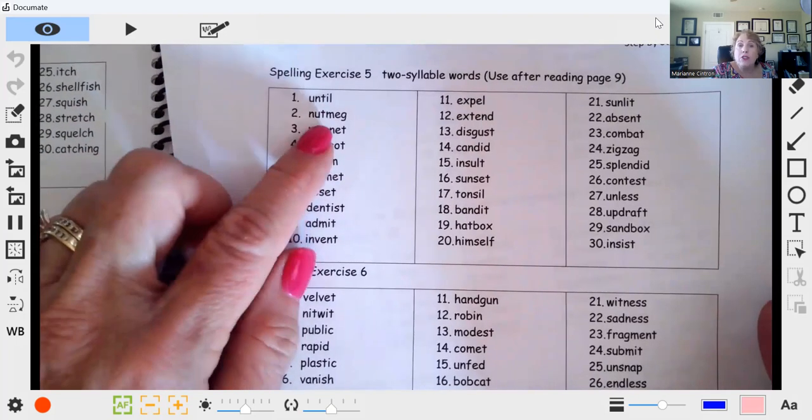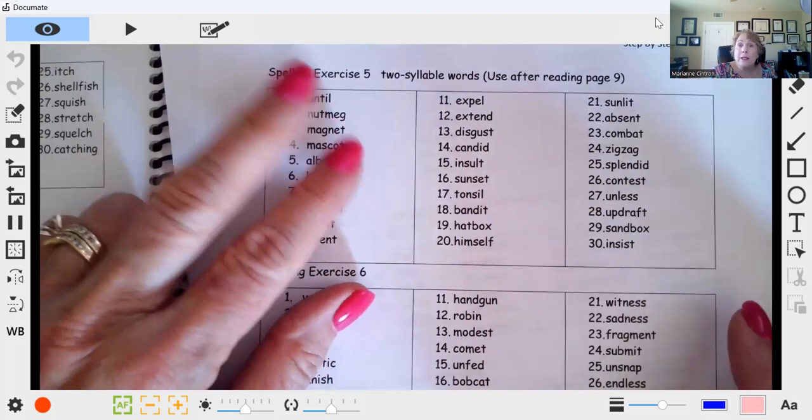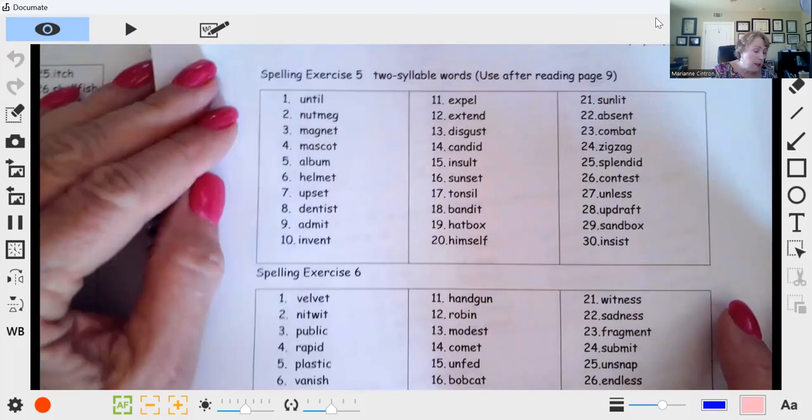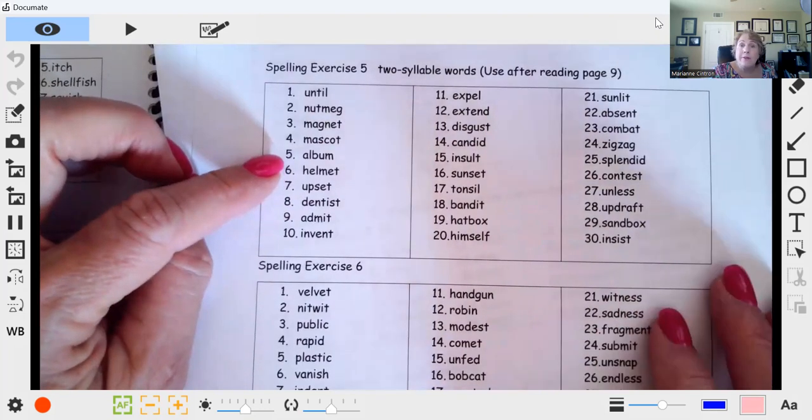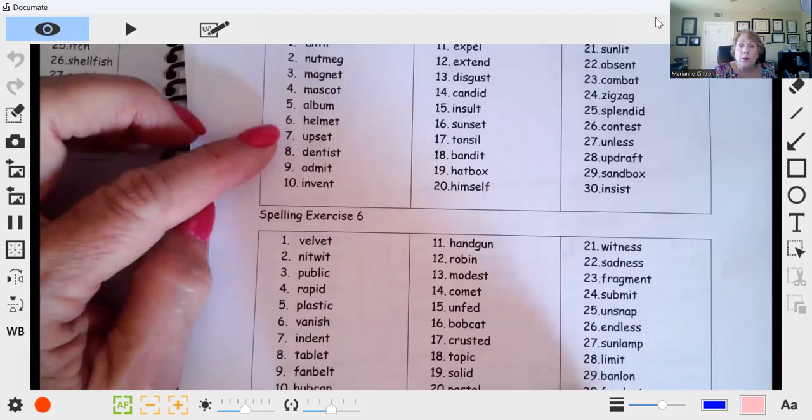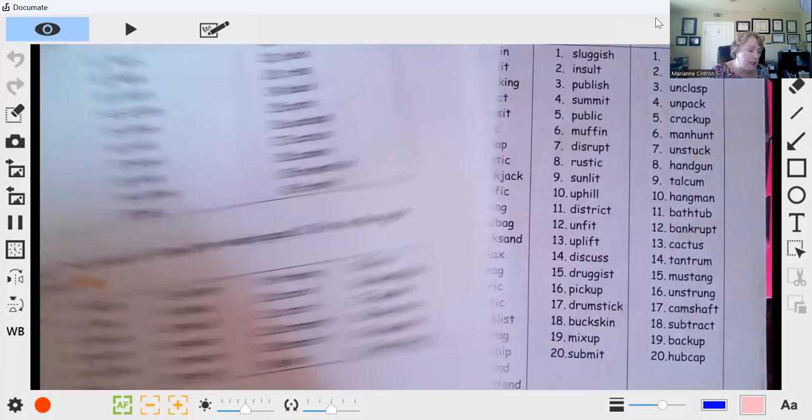So what I'll have a child do is write the first syllable on day one, write the second syllable on day two. This would actually be a real good baseline to see if your child knows syllables. And then we have multisyllabic words. So I go up to 28 exercises.